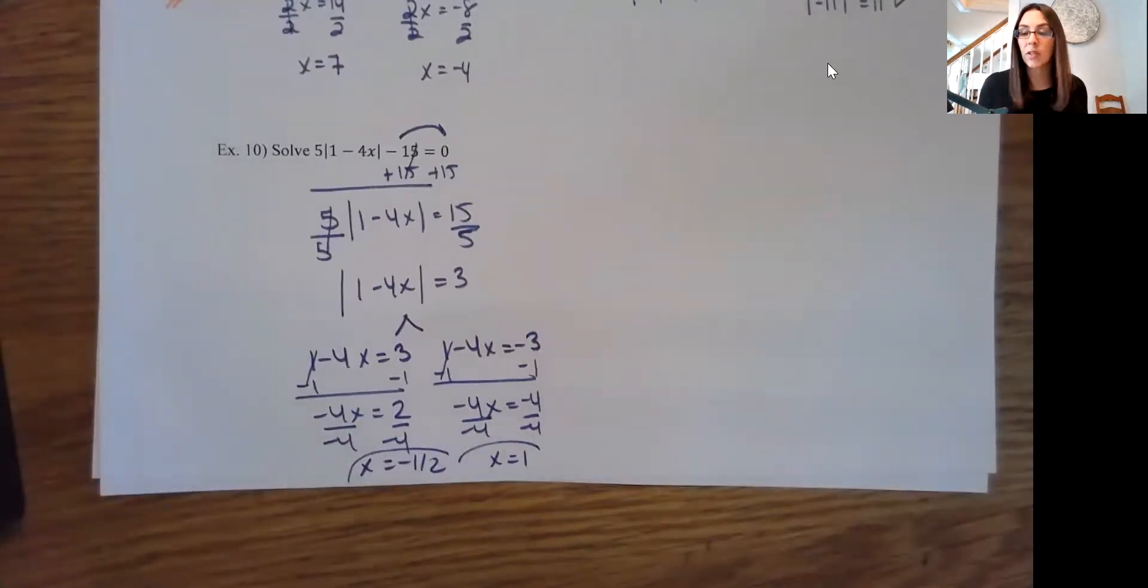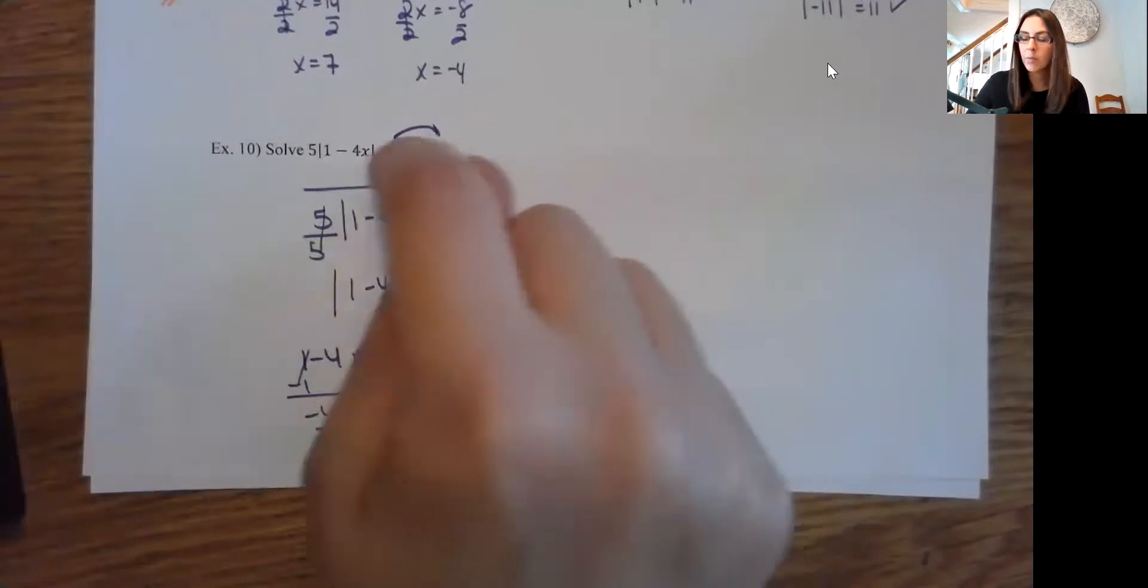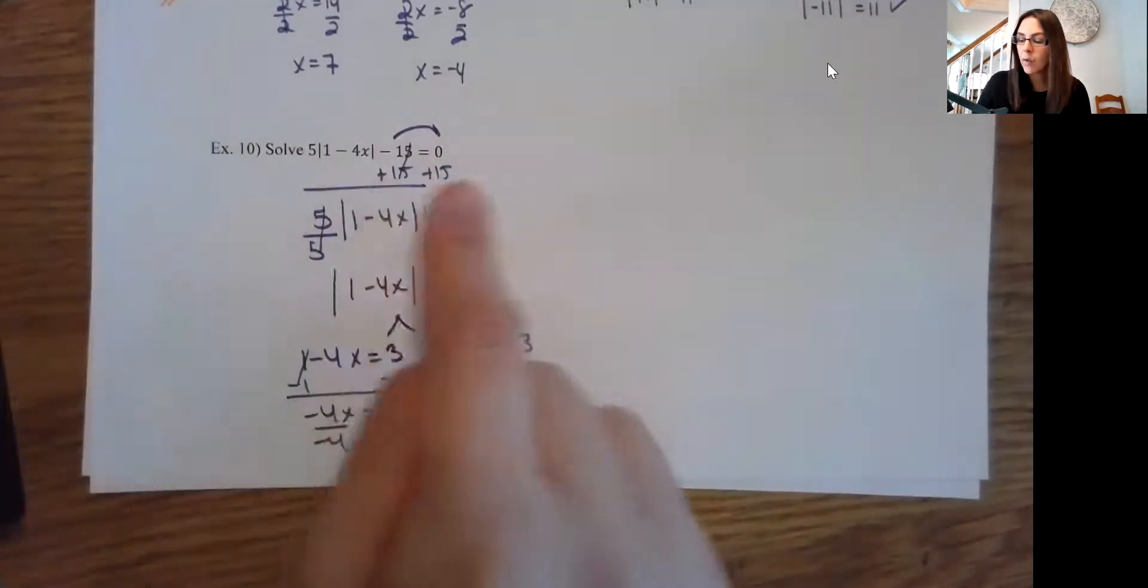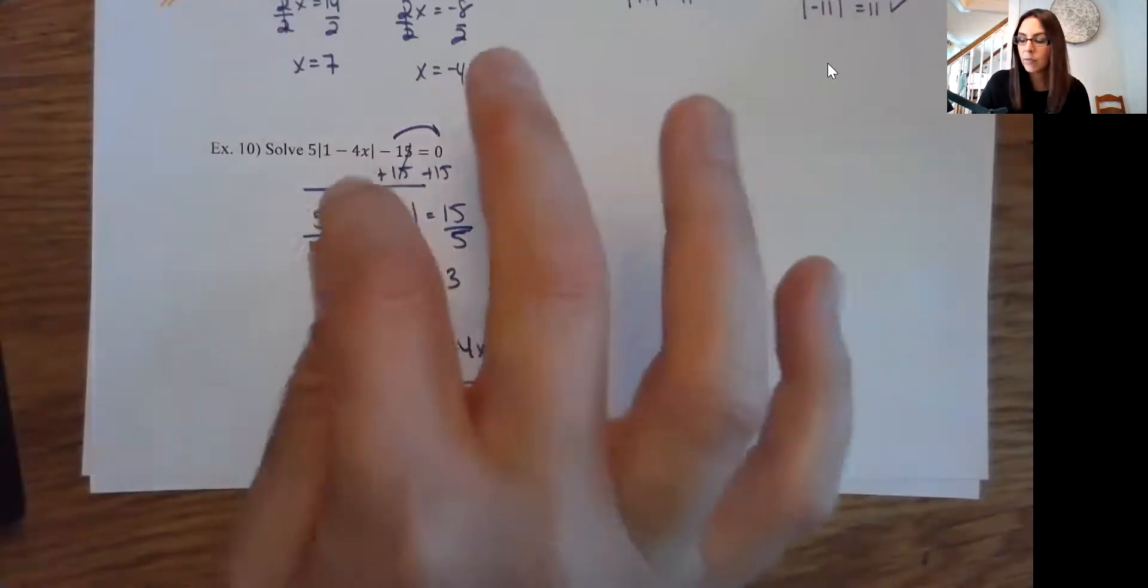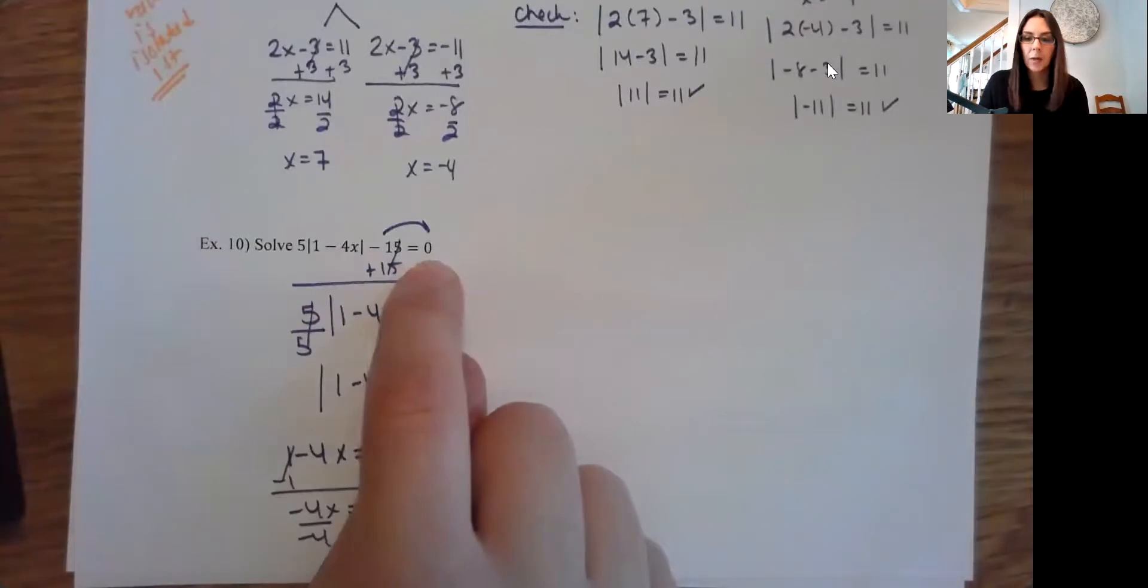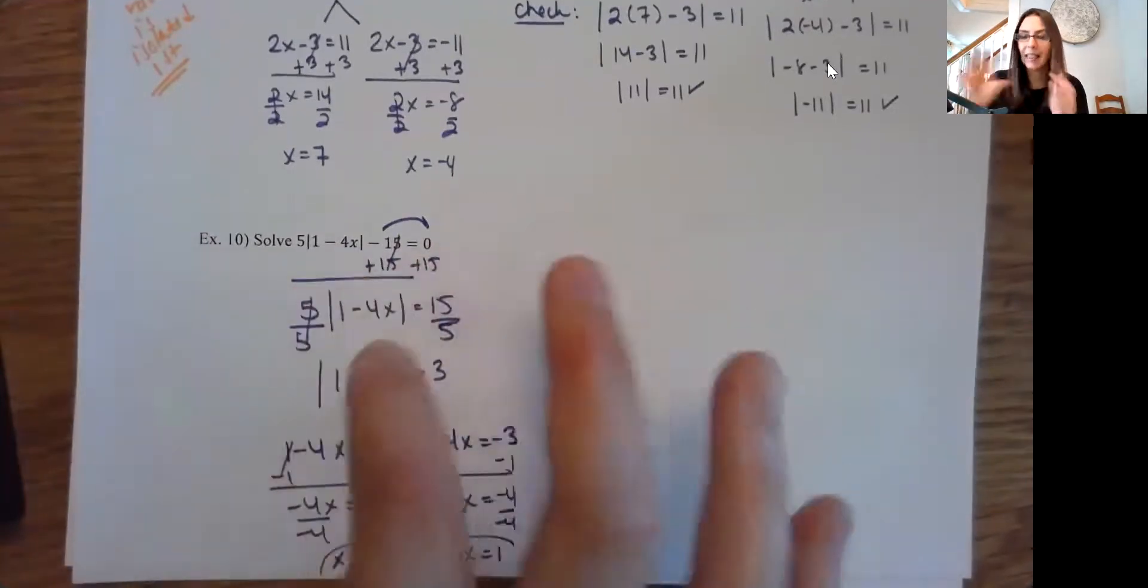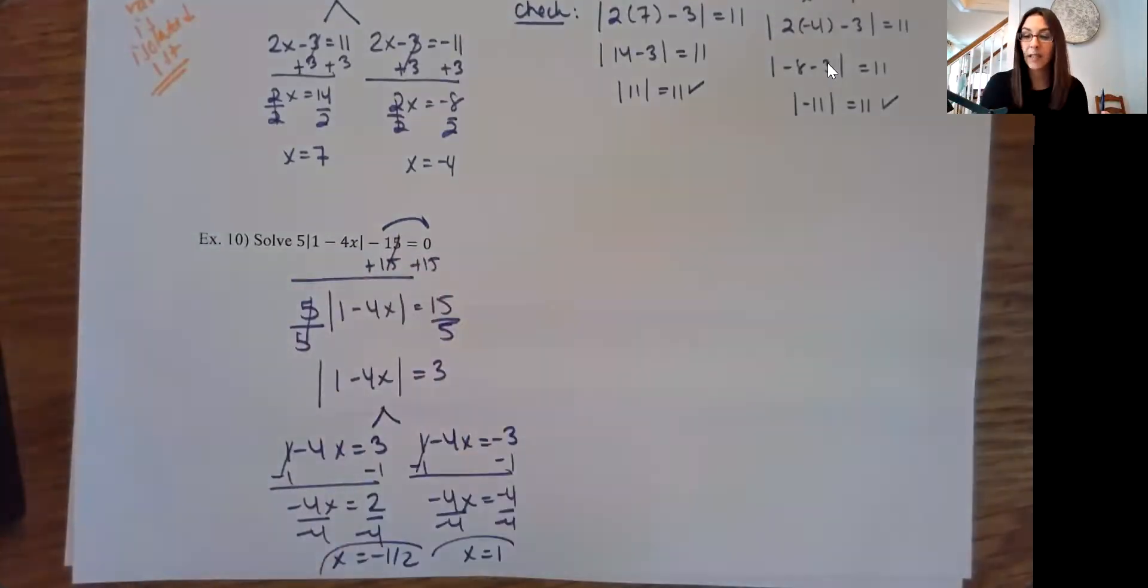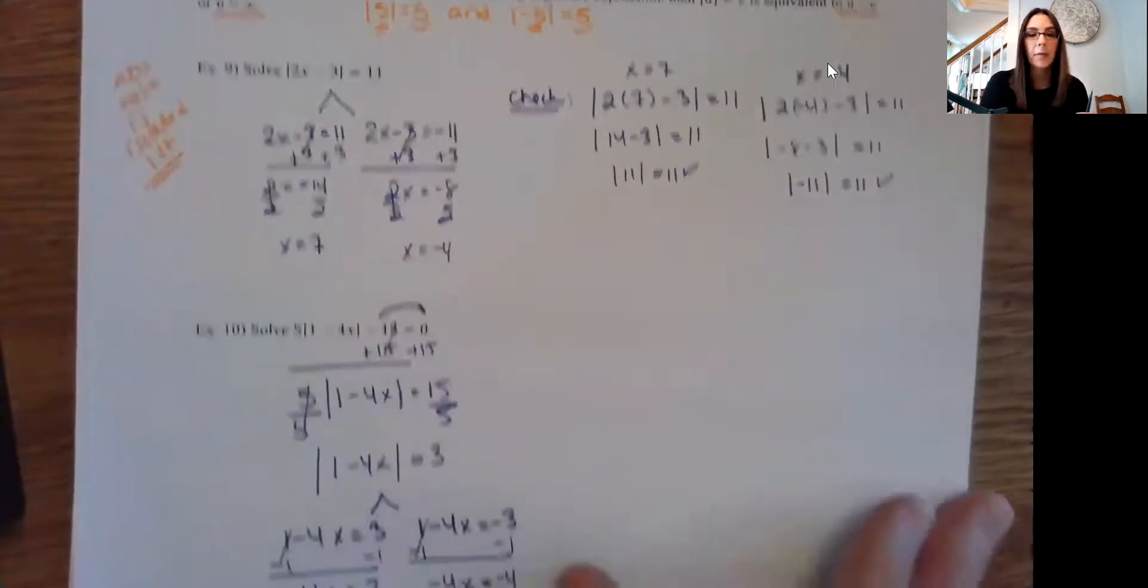Again, we're not worried about extraneous solutions here, so they should work out, assuming you didn't make a mistake. But the big thing here is that students always forget is they jump right in. You don't want to set this equal to positive or negative 15. You need to isolate that absolute value totally first, or set it equal to just the 0. You want to isolate that absolute value first and then split. Otherwise, you're going to get the wrong answer. So you want to be careful there.